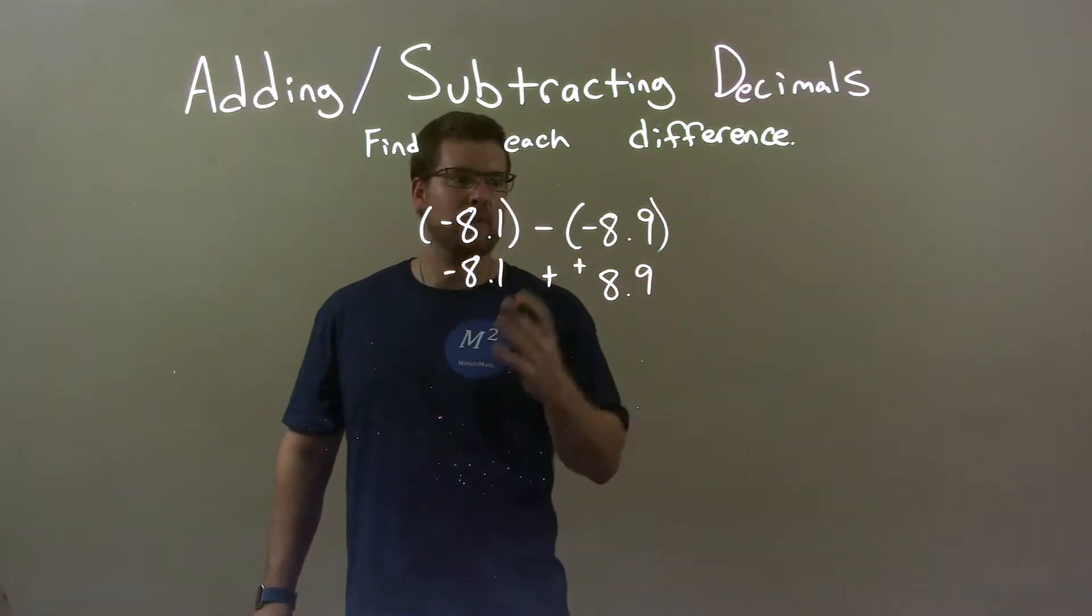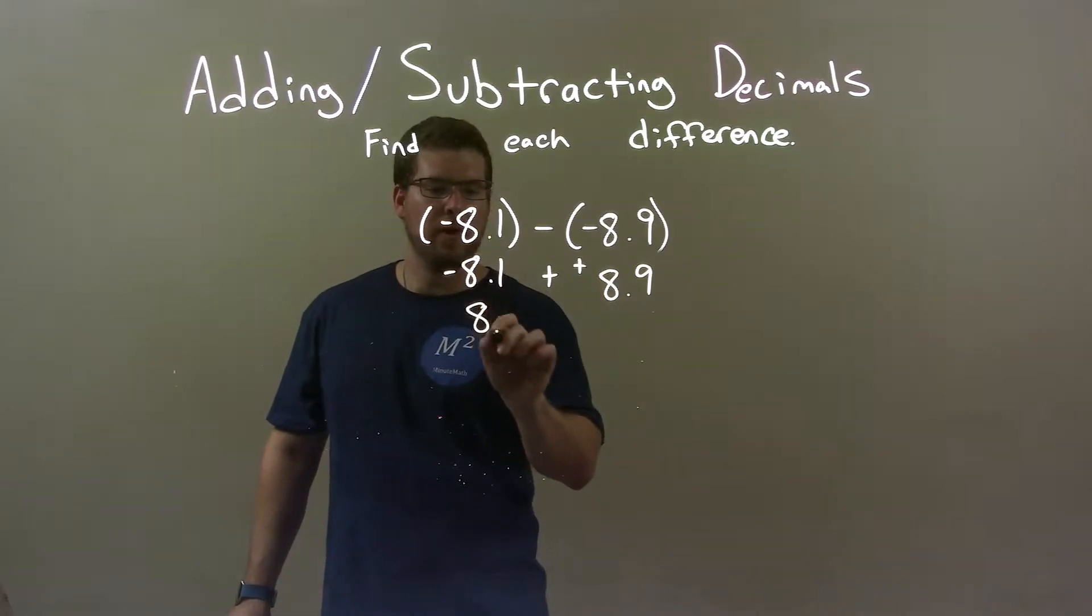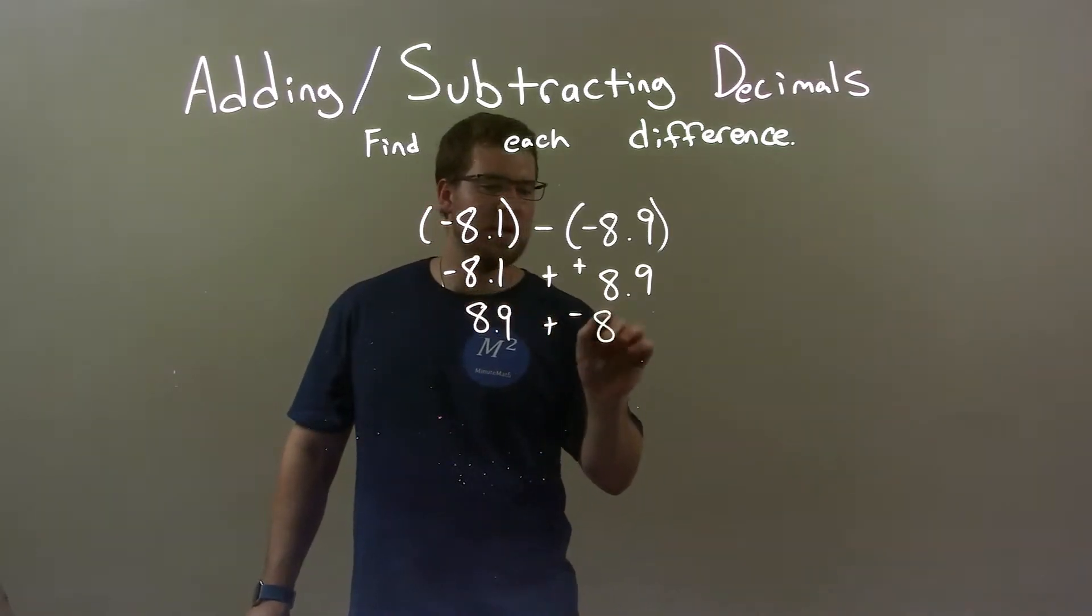Now, with the rules of addition, I can rearrange this. So I have 8.9 first, and then here, plus a negative 8.1.